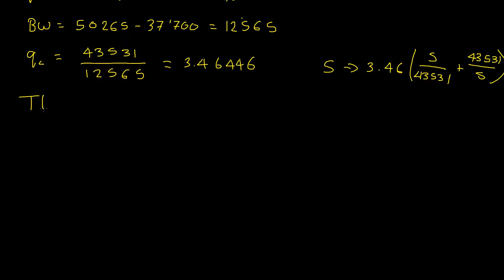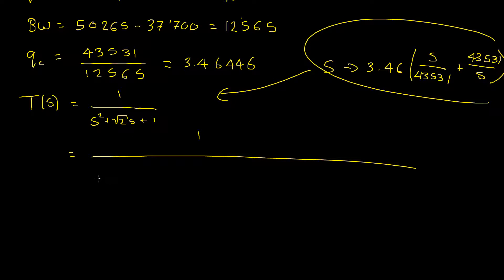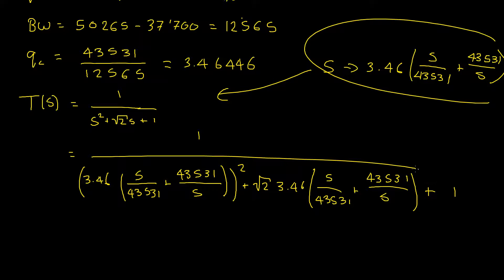Now let's make the substitution. Remember our original transfer function T of S is equal to 1 divided by S squared plus root 2S plus 1. Now let's sub S into our equation. That gives us 1 divided by 3.46 multiplied by S divided by 43,531 plus 43,531 divided by S, and then all of that is squared, plus root 2 times 3.46 and then all that mess inside the brackets again: S divided by 43,531 plus 43,531 divided by S. And then all of that has plus 1 at the end and we've got our equation. No, not really. We're going to have to do a little bit more algebra before we can finish up here.